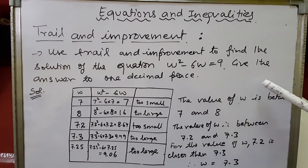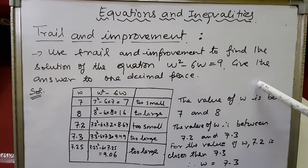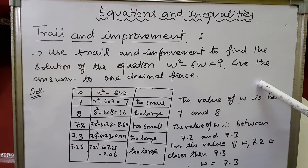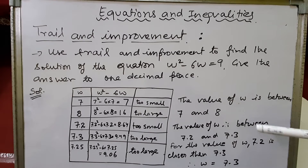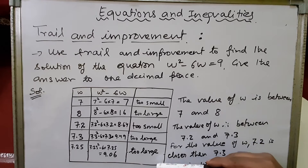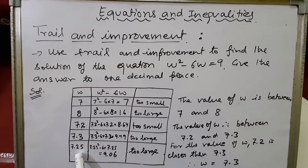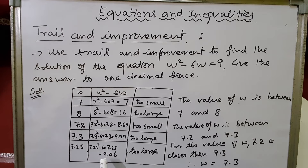So this is the concept. Now let's try to understand it with the help of an example. The question says: use the trial and improvement method to find the solution of the equation w² - 6w = 9. We have made a table. On the extreme left we have written the value we are going to try — that is the w column, because w is the variable. The equation is w² - 6w, so the result will come when we substitute the value of w.